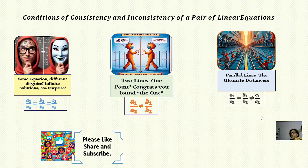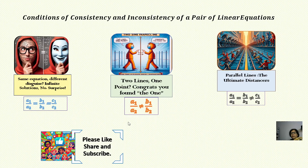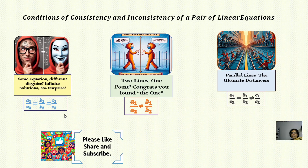The third case is a1/a2 = b1/b2 ≠ c1/c2, which gives us parallel lines — the inconsistency condition. Here a1/a2 is the coefficient of x, b1/b2 is the coefficient of y, and c1 and c2 are the constants. We must keep this in mind.